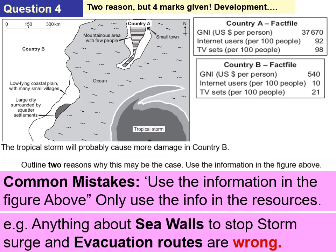The next question states that a tropical storm will probably cause more damage at country B, and asks you to outline two reasons why, using information from the figure above. It does not say use other information — only the figure, which is a map with a fact file on country A and country B. Common mistakes: writing about sea walls or evacuation routes would be incorrect because that information is not in the figure.